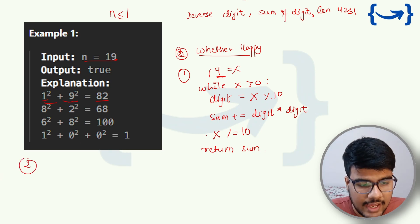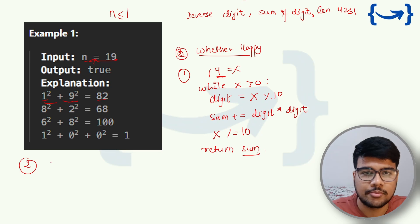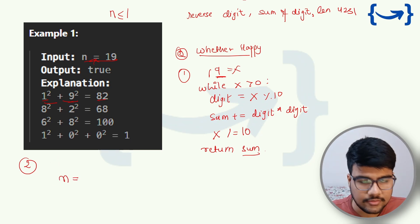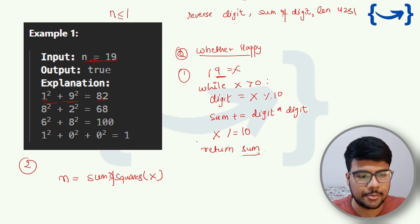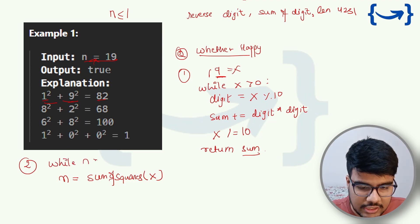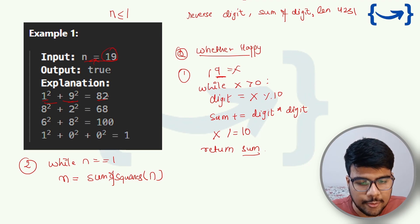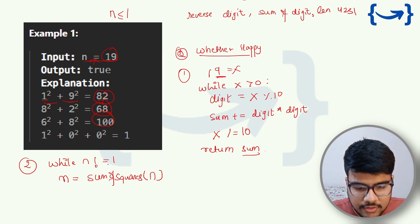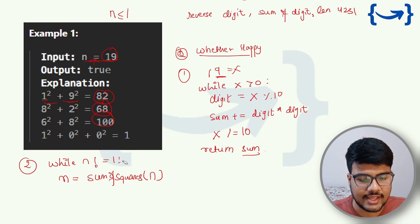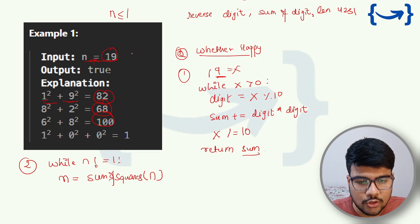For the second task: once we get the sum (e.g., 82), we need to perform this operation again and again. So in the main function, we call n = sumOfSquares(n) repeatedly in a while loop, continuing until n equals 1. However, there's an edge case: what if we keep getting the same sum repeatedly? For example, with n = 0, the function returns 0 forever, and we get stuck in an infinite loop.